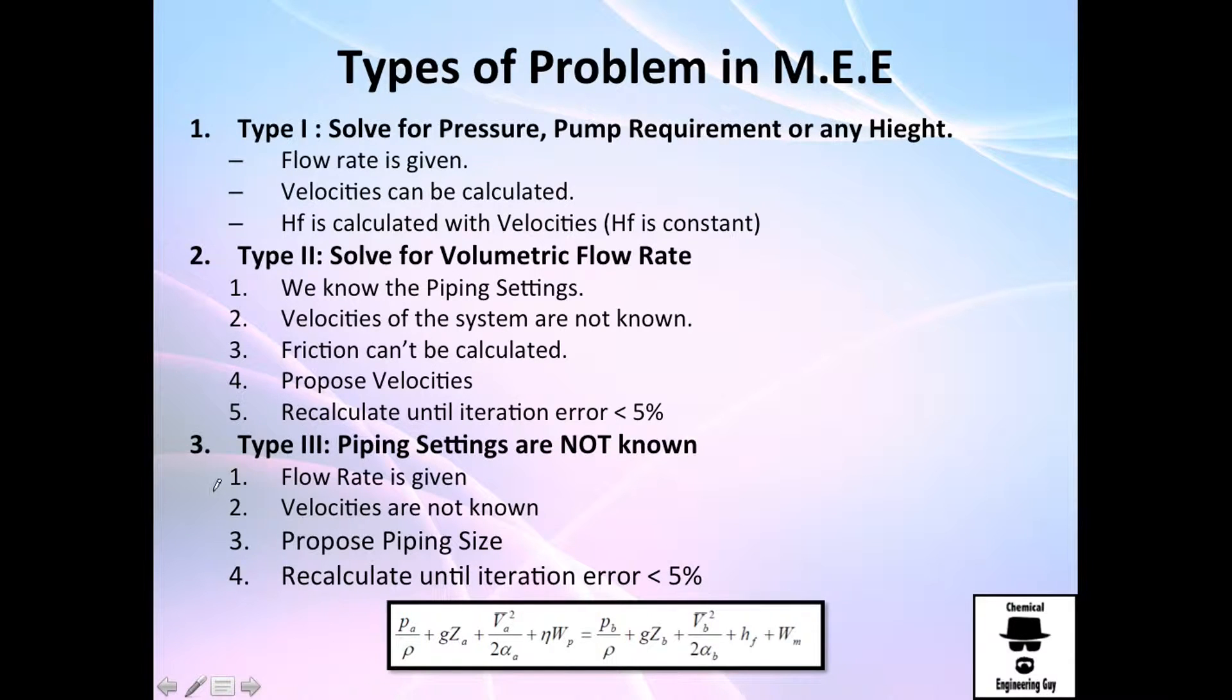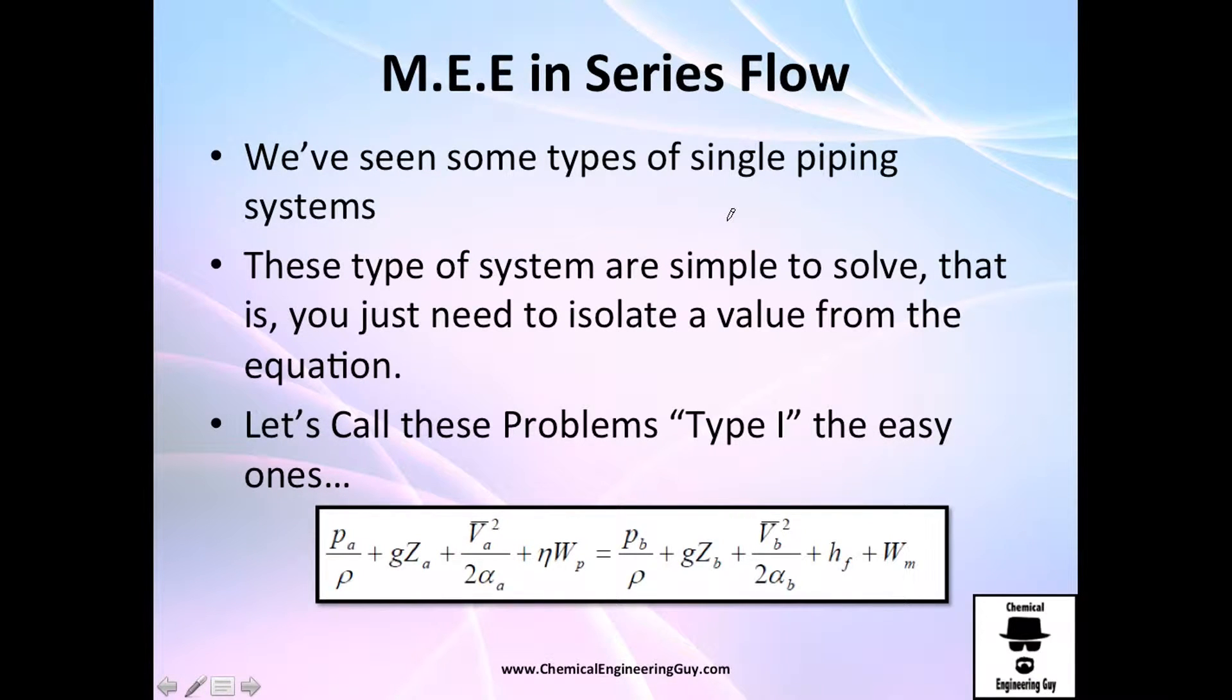All these three types are problems in series arrangement. So as I told you before, type 1 was always solve for pressure, solve for pump requirement, solve for height or any given value. Now, the flow rate was always given, the velocity was given or you could calculate it from the volumetric flow rate. And with the velocity, we could either calculate or find the energy loss, which is right here. This is function of velocity.